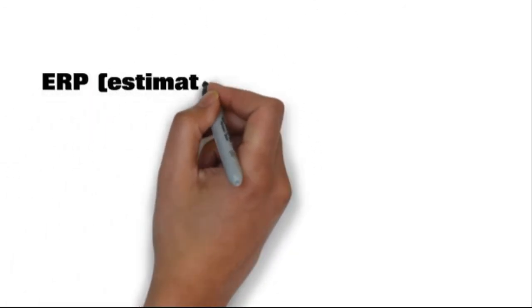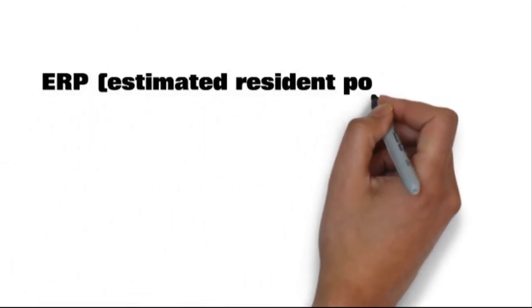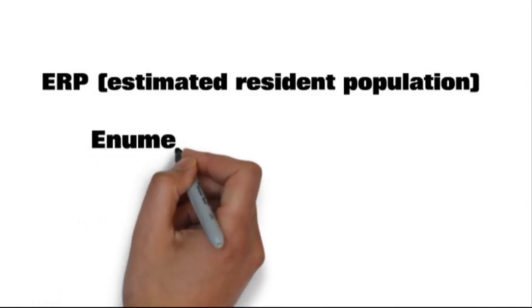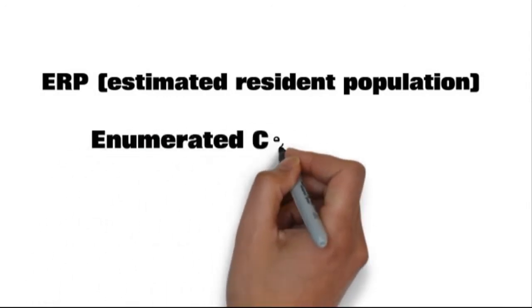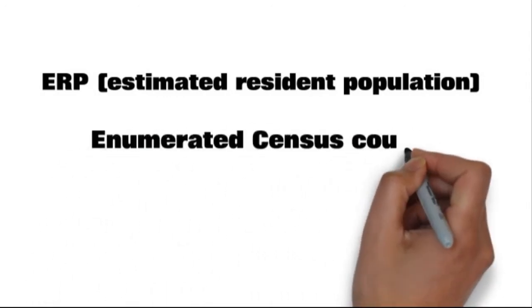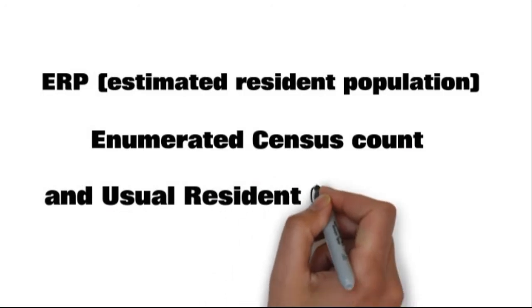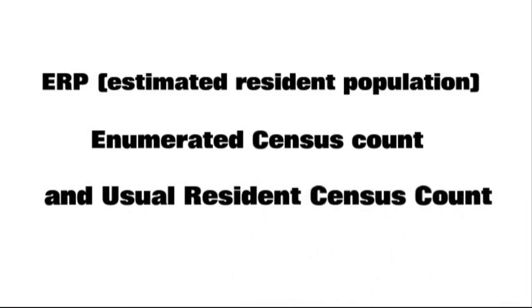The three options are: the ERP — estimated resident population — the enumerated census count, and the usual resident census count. Which one should she use? Well, it depends. Let's look at each one.